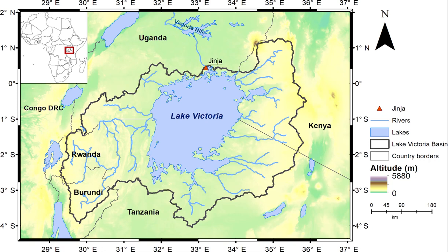Greetings my friends. This is a map of Lake Victoria. Lake Victoria is one of the African Great Lakes. With an area of approximately 59,947 square kilometers, Lake Victoria is the largest lake in Africa by area, the largest tropical lake in the world, and the second largest freshwater lake in the world by area after Lake Superior in North America.